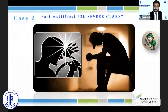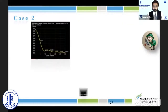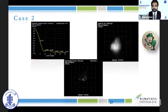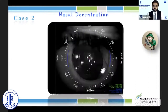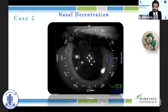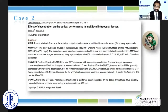Coming to the next case, the patient post-surgery had severe glare and the optical quality assessment confirmed the same. When we looked closely at the slit lamp, there was actually decentration — nasal decentration of the lens. We always remember these multifocal or trifocal lenses are very sensitive to decentration. So always look for it and make sure the lens is centered post-surgery.